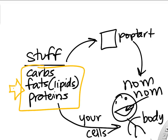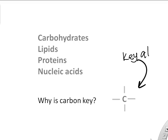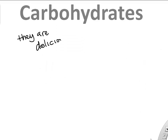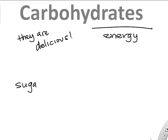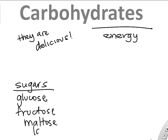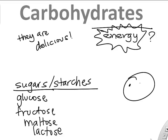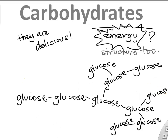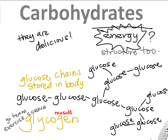We'll look at the function of each of these molecules. A key atom for all of them is carbon, because it can make four chemical bonds with four other atoms and it's really small. Carbohydrates are for energy — things like bread and pasta. You've heard of glucose, fructose, maltose, and lactose from milk. Those are carbohydrates: sugars or starches we get in our diet and also find in our body.